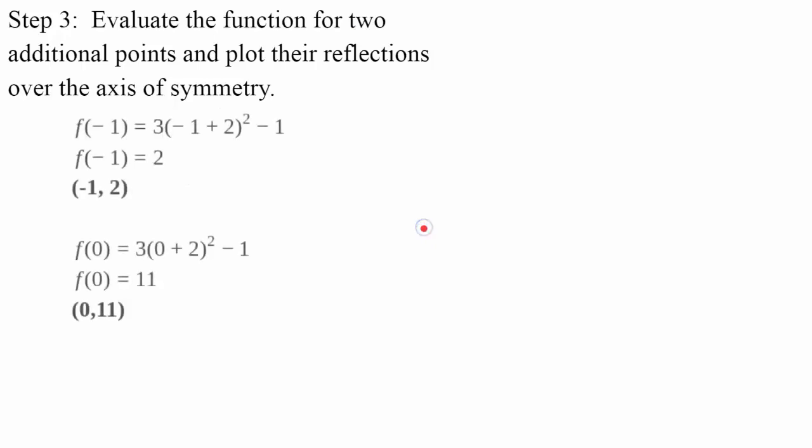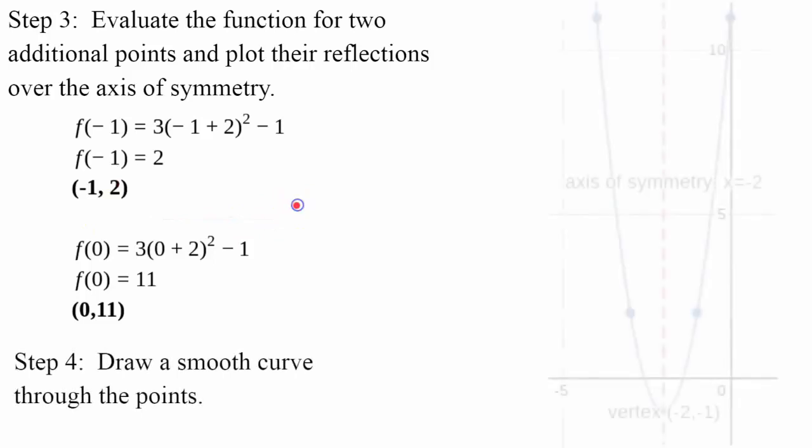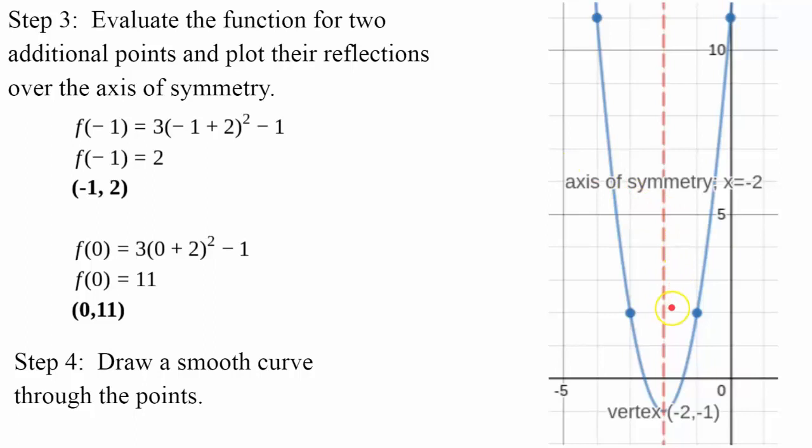I need to evaluate the function for two additional points. I chose negative 1 and 0 to get (-1, 2) and (0, 11). So I've plotted my vertex, (-2, -1), drawn my axis of symmetry.